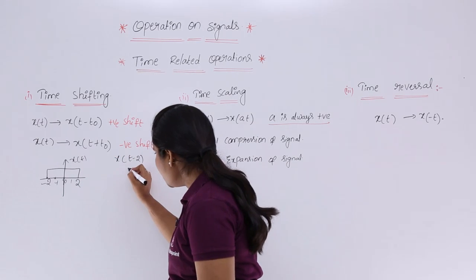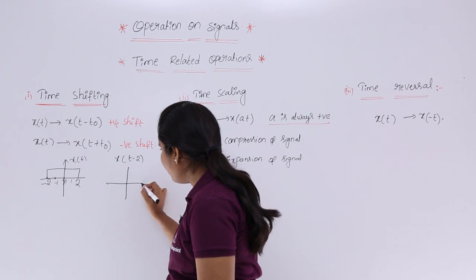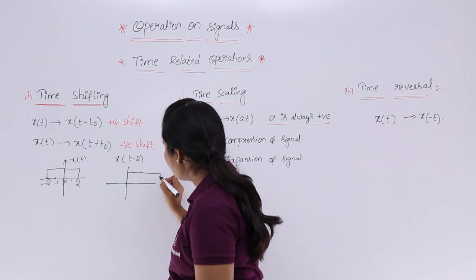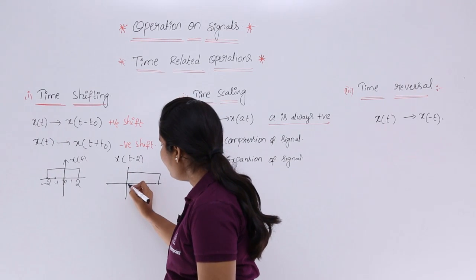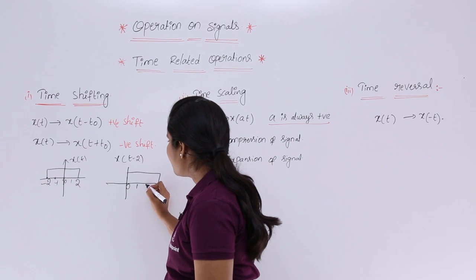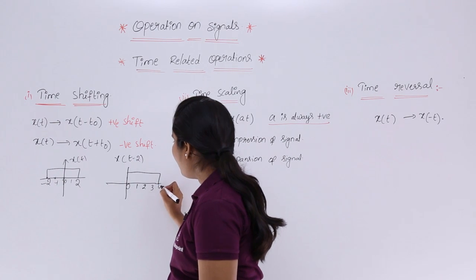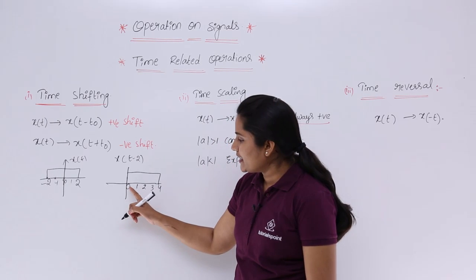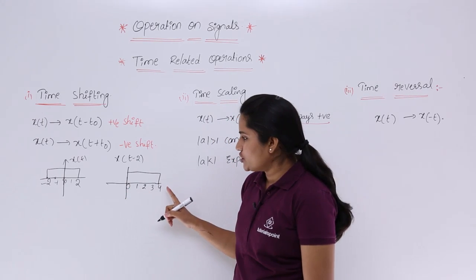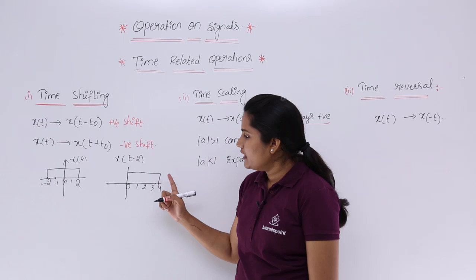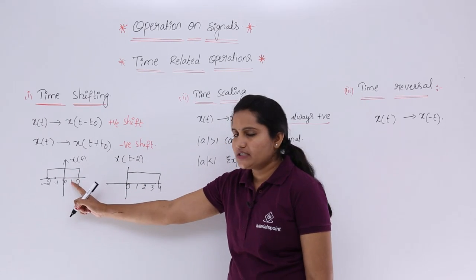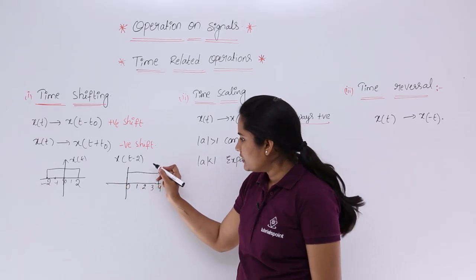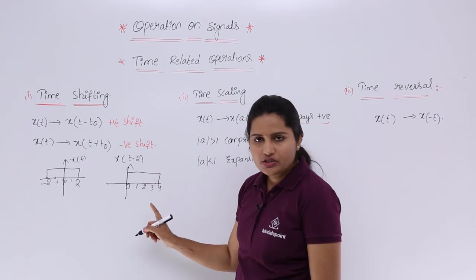After shifting to the right by 2 positions, your signal position will move to 0, 1, 2, 3, 4. So you will get a rectangular signal from 0 to 4. The shifted version of the original signal by 2 positions gives this new signal. This is x(t minus 2).